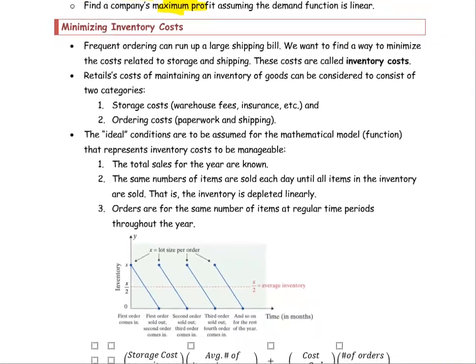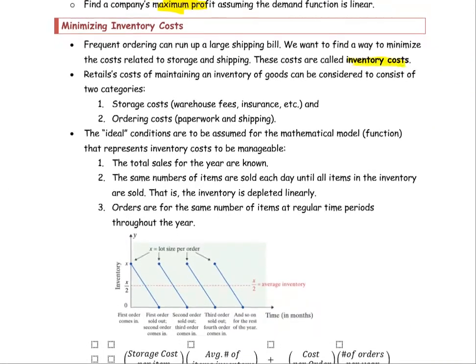For the cost function in the first part of section 4.4, we look at the inventory cost. The inventory cost is the sum of the storage cost and the ordering cost. So when you set up the cost function, it's going to be the sum of these two portions. The first portion, the storage portion, comes from the warehouse fee and so forth.